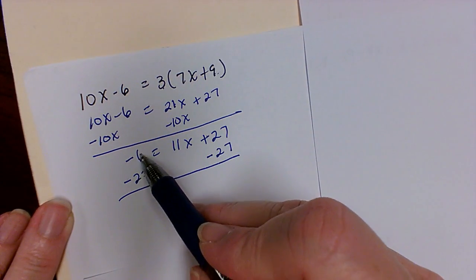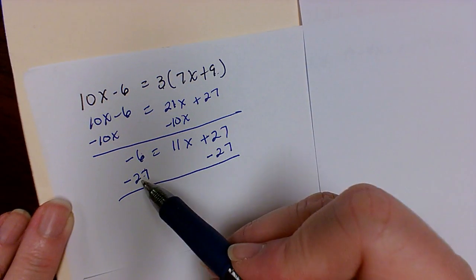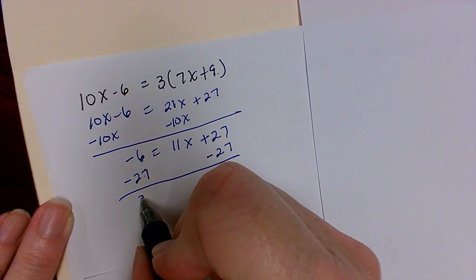Here, these are the same sign. We're going to add them and keep the sign. So 27 plus 6 will get me 33.